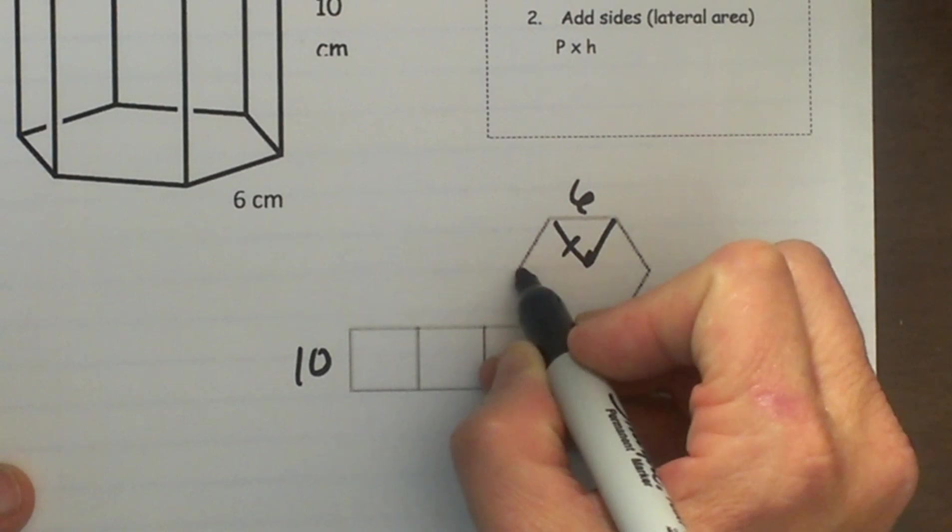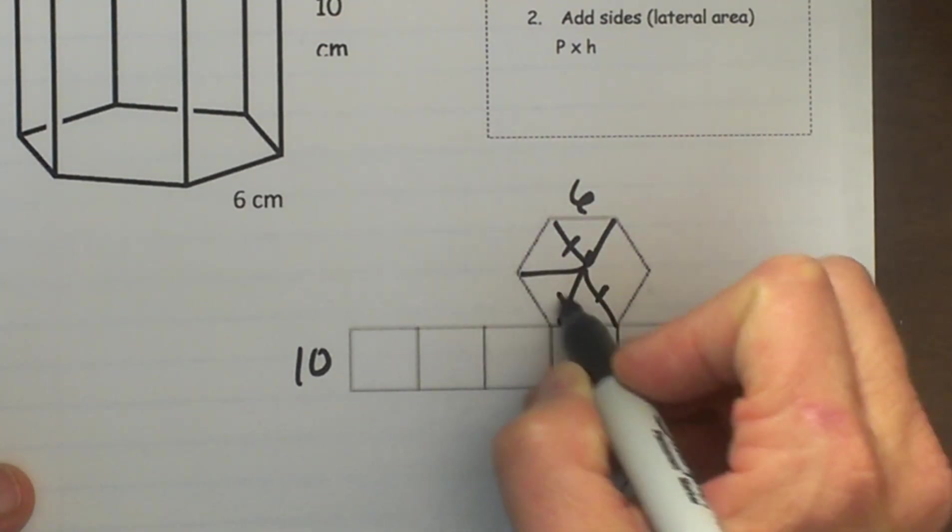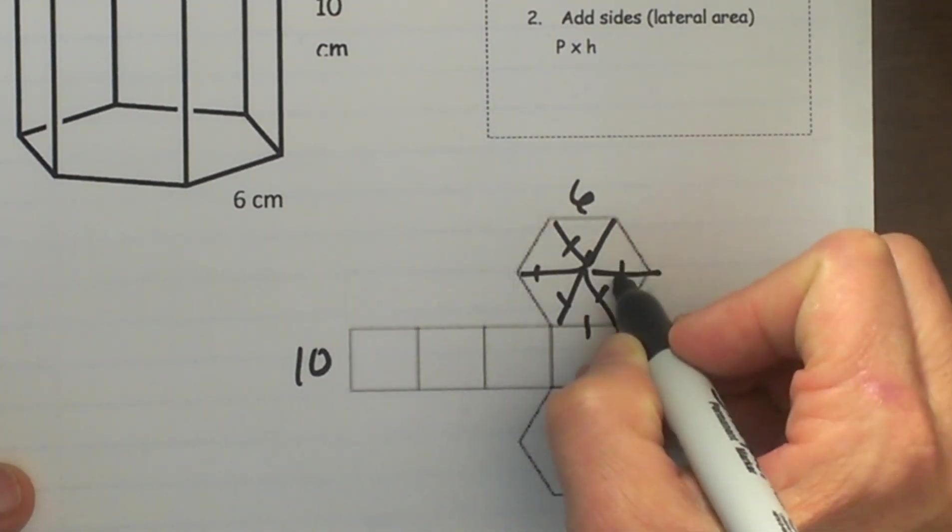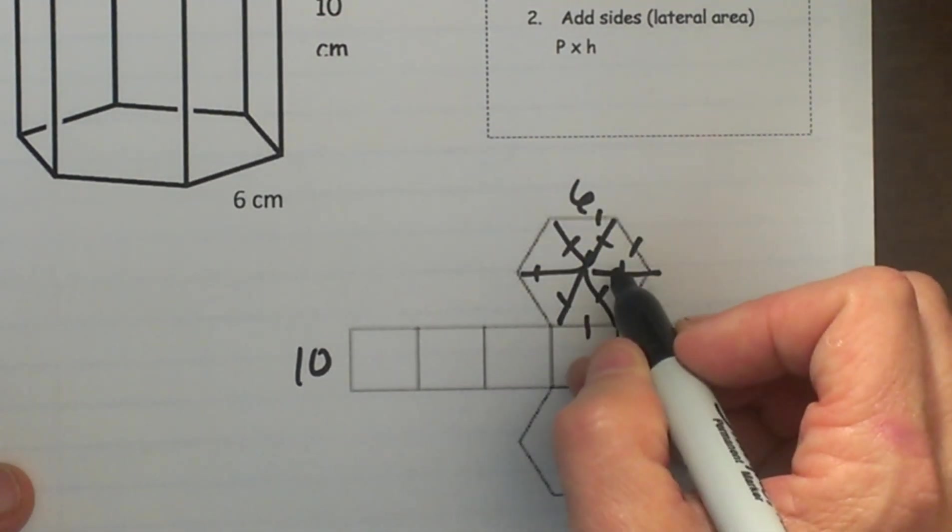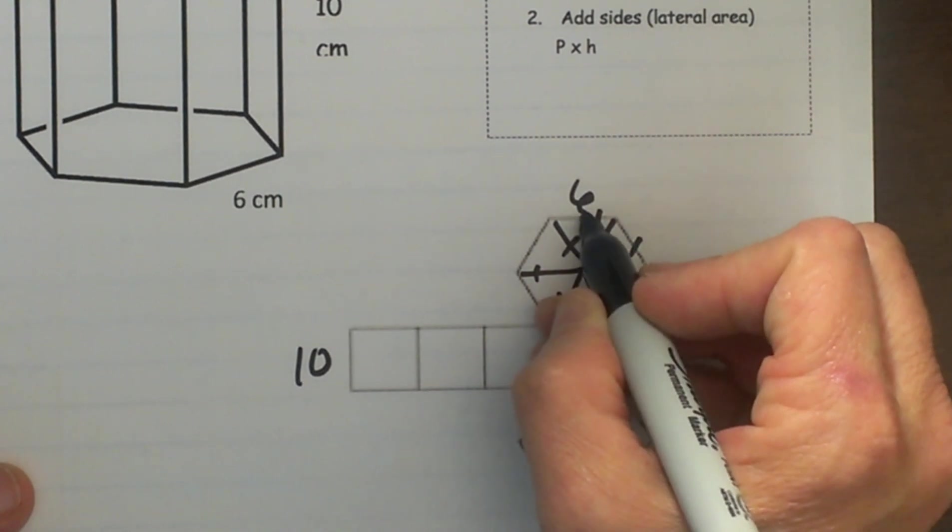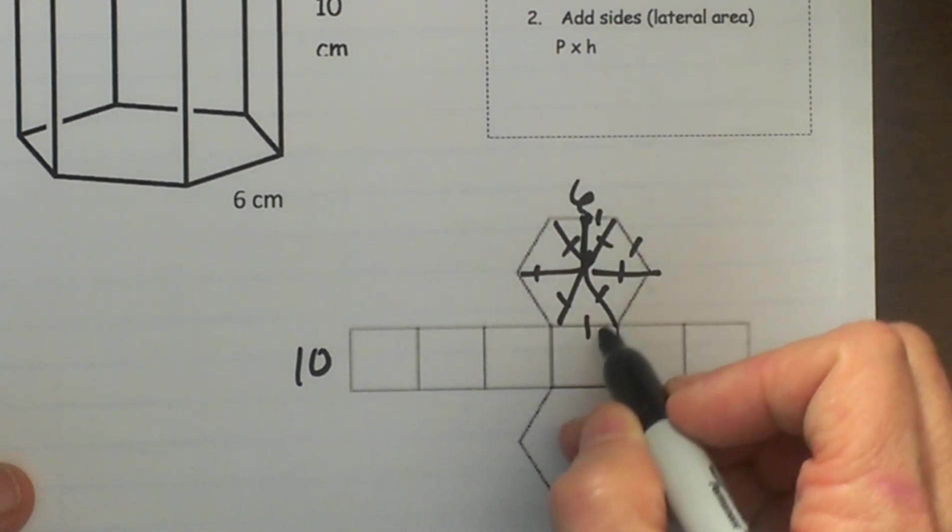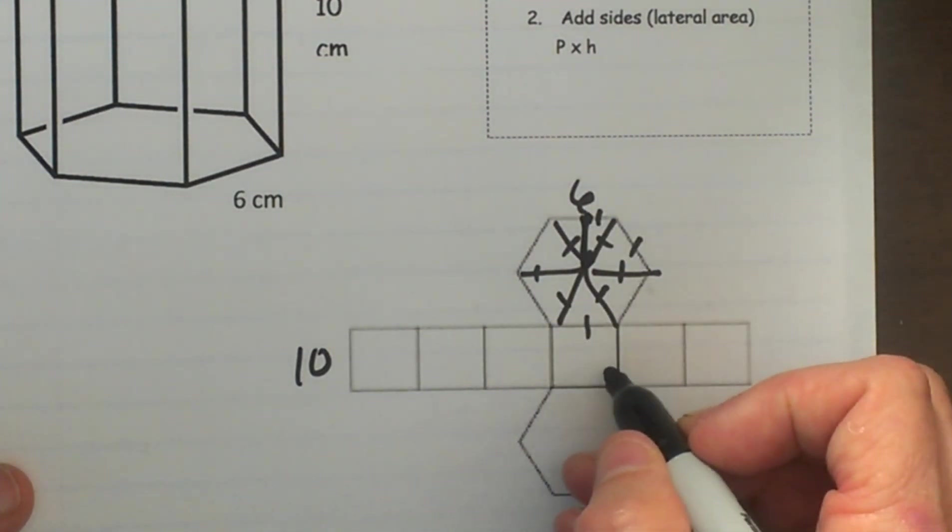I am going to draw in some equilateral triangles and you can see that in a hexagon you have 6 equilateral triangles. So to find this apothem which is from the center to the side I am going to use 30, 60, 90 triangles.